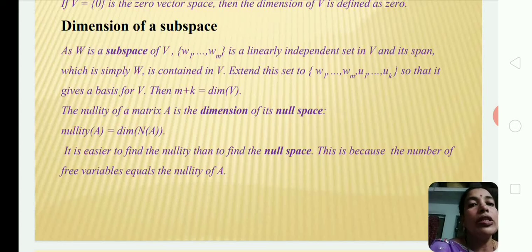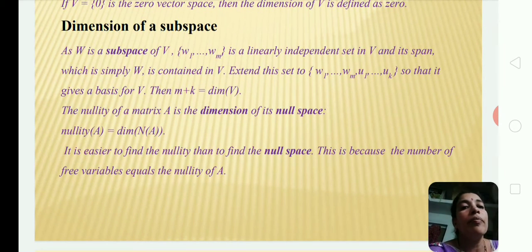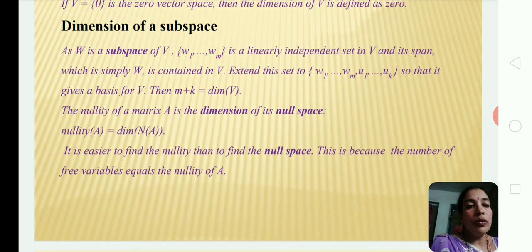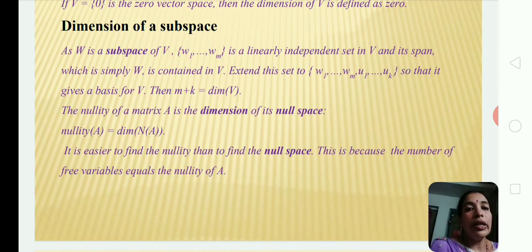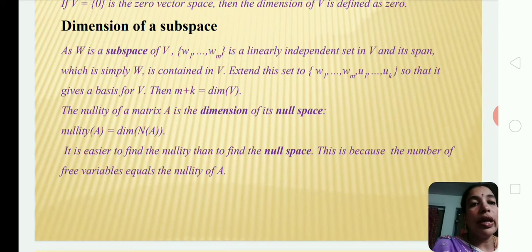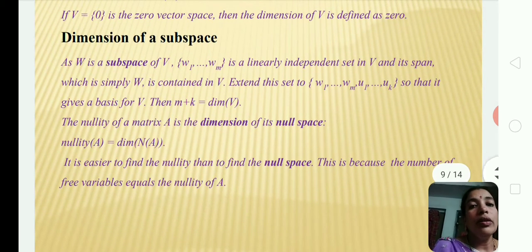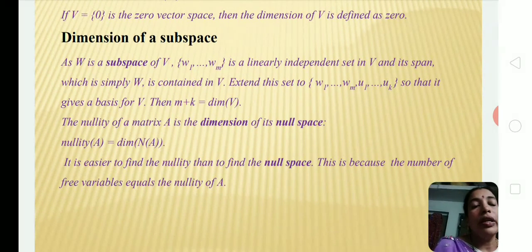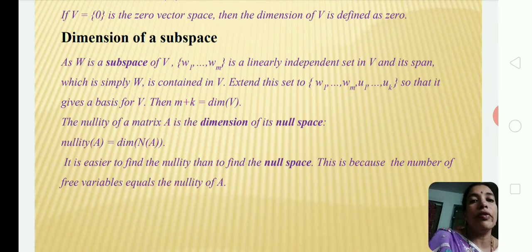Dimension of a subspace: let W be a subspace of V. If {w1, w2, ..., wm} is a linearly independent set in W, and the combined set {w1, w2, ..., wm, u1, u2, ..., uk} gives a basis for V, then m + k = dimension of V.